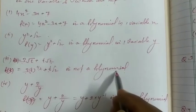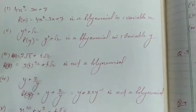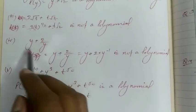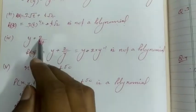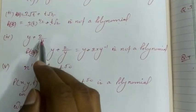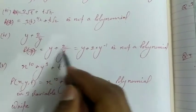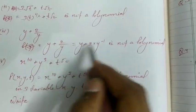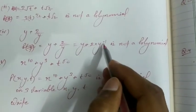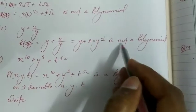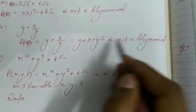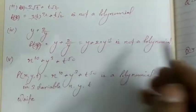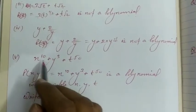Fourth part: y + 2/y. When simplified, this becomes y + 2 × y^(-1). Since the power of variable y is negative here, this is also not a polynomial, because the power of the variable must be a positive integer. So this is not a polynomial.